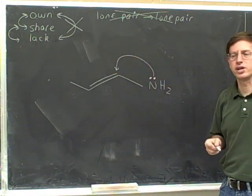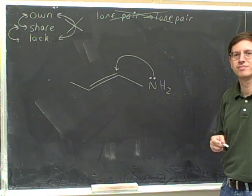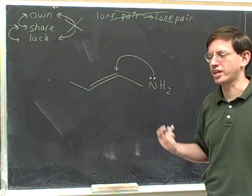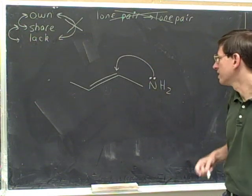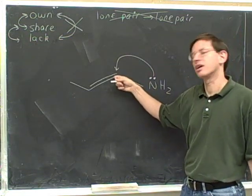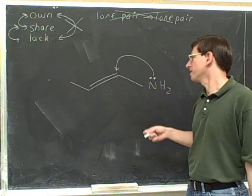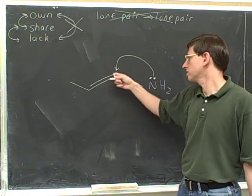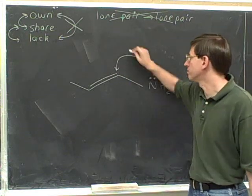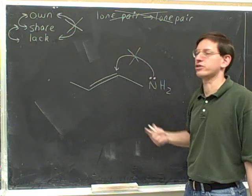Is this a legal electron-pushing arrow for resonance? This is the same problem as before. The head is pointing directly at this atom, and the tail is at the lone pair. That means we're trying to go from a lone pair on the nitrogen to a lone pair on the carbon. You're not allowed to do that — you're not allowed to go from lone pair to lone pair. This is another illegal electron-pushing arrow.